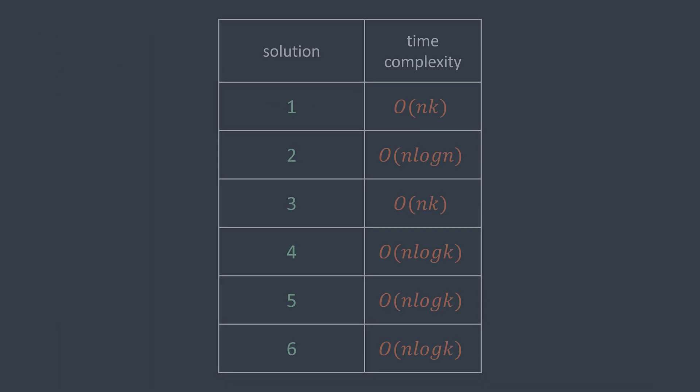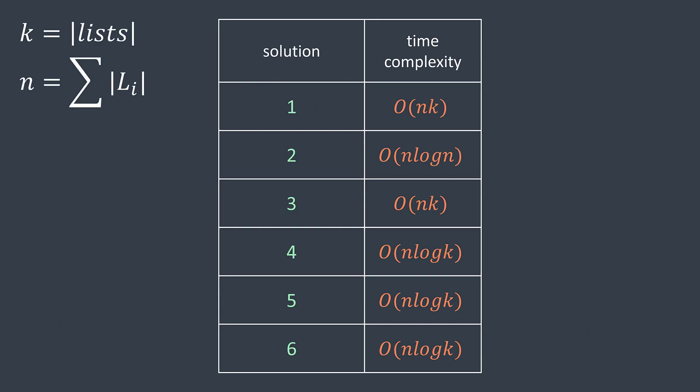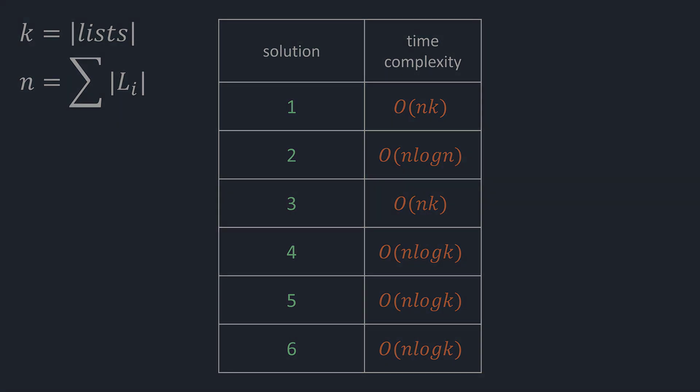We've seen a total of six solutions. We obviously prefer the O(n log k) solutions because k is usually much smaller than n. Among the three O(n log k) solutions, after testing with different inputs, I noticed that the priority queue one is fastest. We covered K-way merge algorithms in this video. It's interesting to see how the same problem can be solved in many different ways. If you enjoyed it, like, subscribe, and share the video, and see you in the next one.